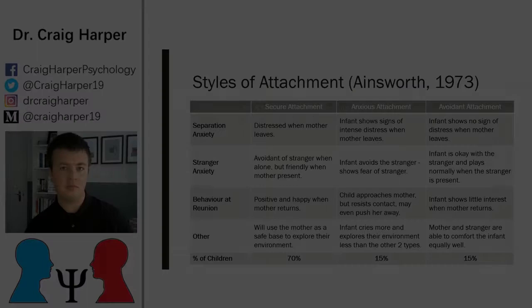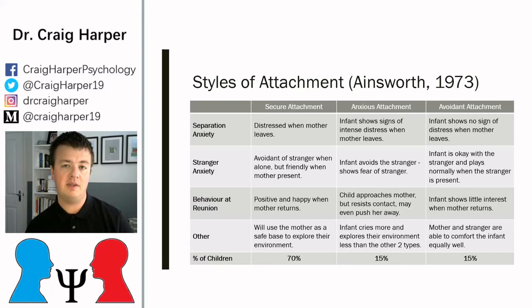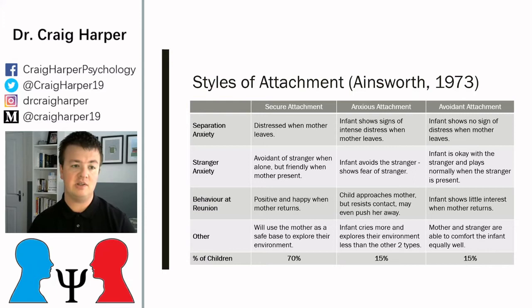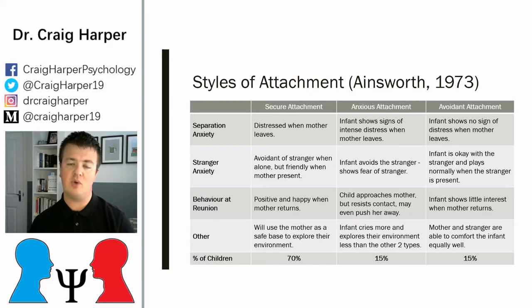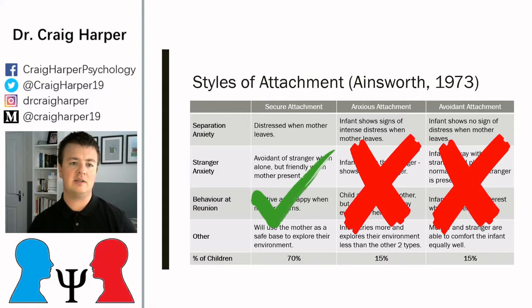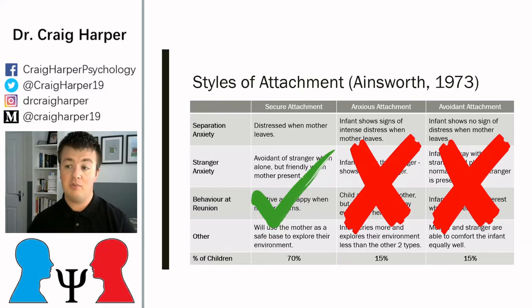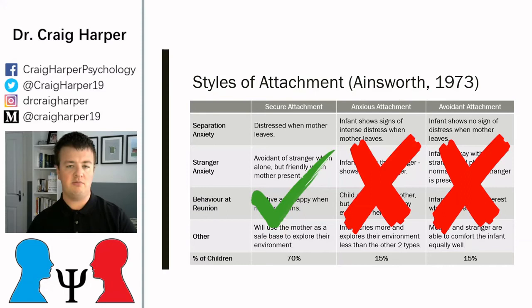This slide reiterates the key points of the strange situation experiment, showing what happens at separation, in response to a stranger, and at reunion across the three attachment styles. Anxious attachment here is the same as ambivalent attachment in the video. What we're looking for is a secure attachment, where someone can use their attachment figure as a safe base for exploring the social world. People with insecure attachment — whether anxious, avoidant, or disorganized — tend to have more issues around interpersonal communication, emotion regulation, and delinquent or criminal behavior.